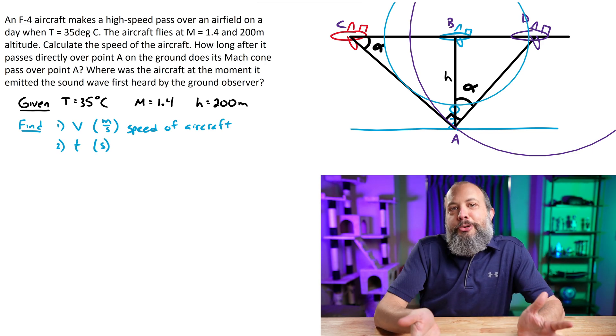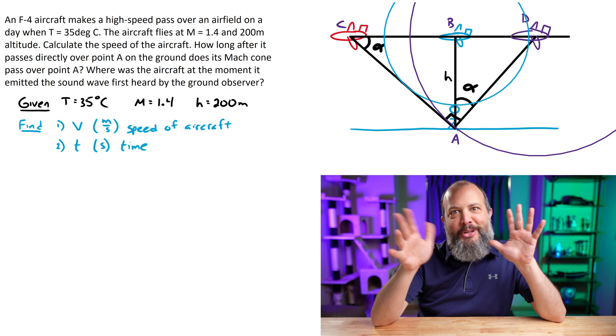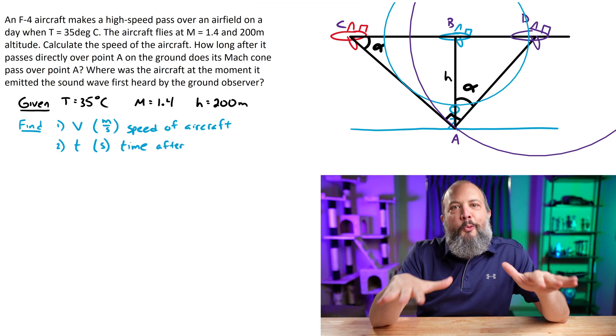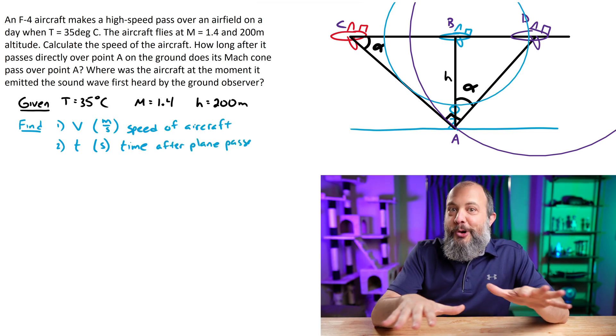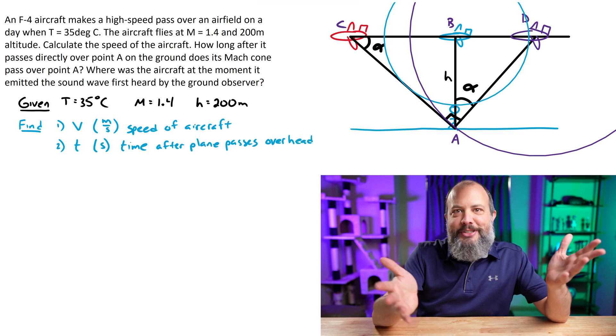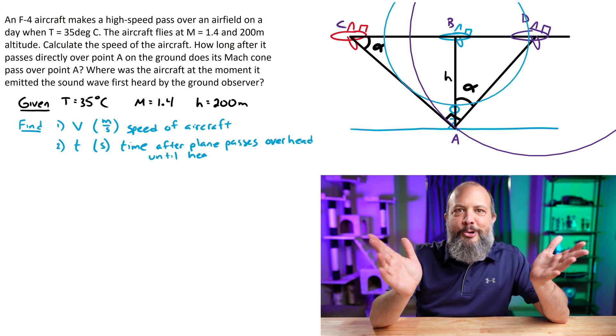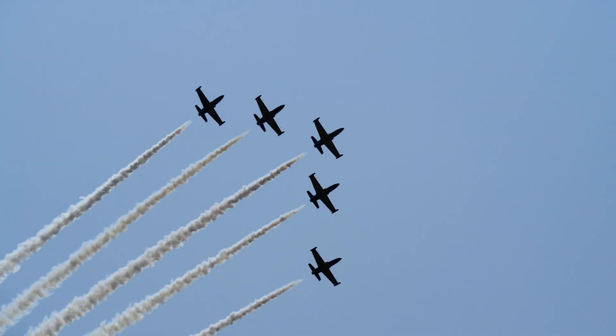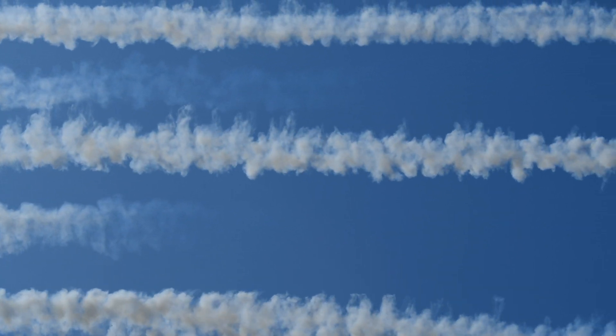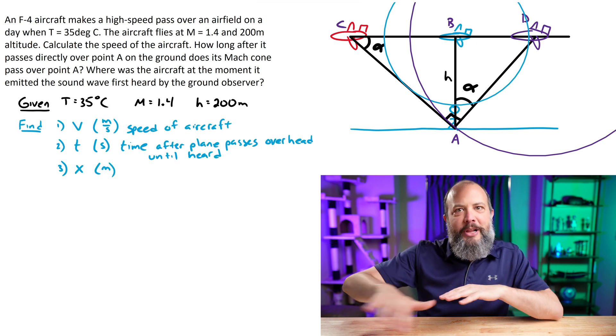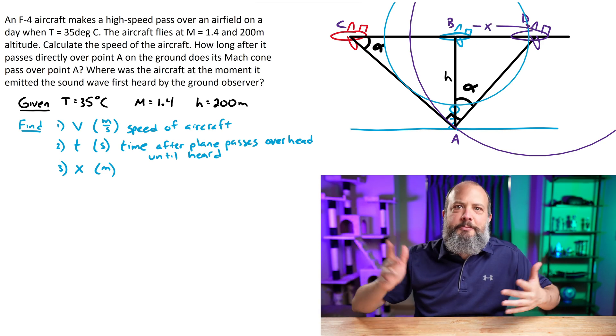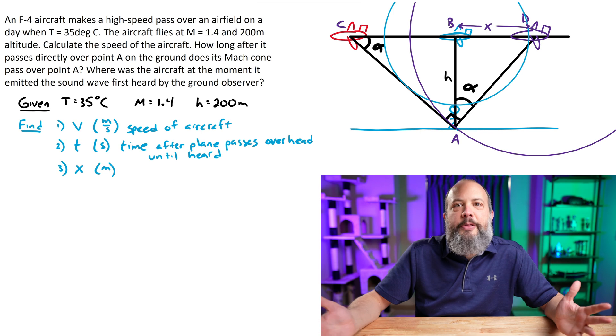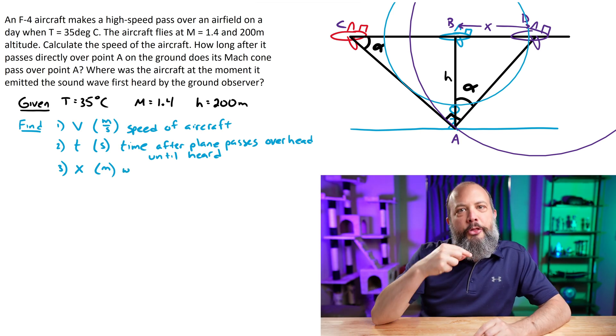Let's keep setting up this problem. We're given temperature 35 degrees Celsius, so this air show must be on a hot summer day. Mach number 1.4, so we're going faster than the speed of sound, something like 900 miles an hour. And a height of only 200 meters, something like 600 or 700 feet. This makes sense for an air show, because when planes are just traveling from one place to another, they're going to be way higher than this, like 10,000 meters.